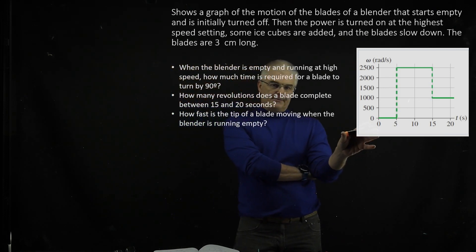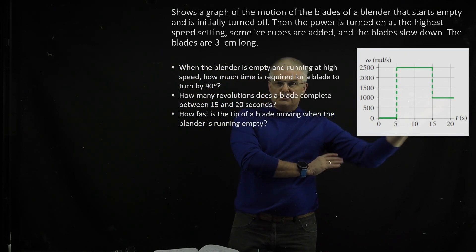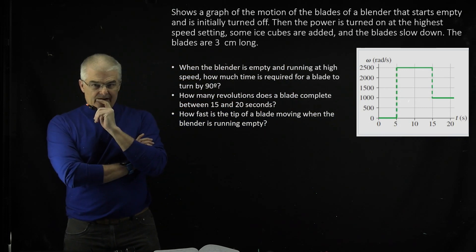So the blender first is stopped, and then this is when it's empty, and then when you add the ice cubes, it slows down. So when it says when the blade is empty, that is at 2,500 rad/s.